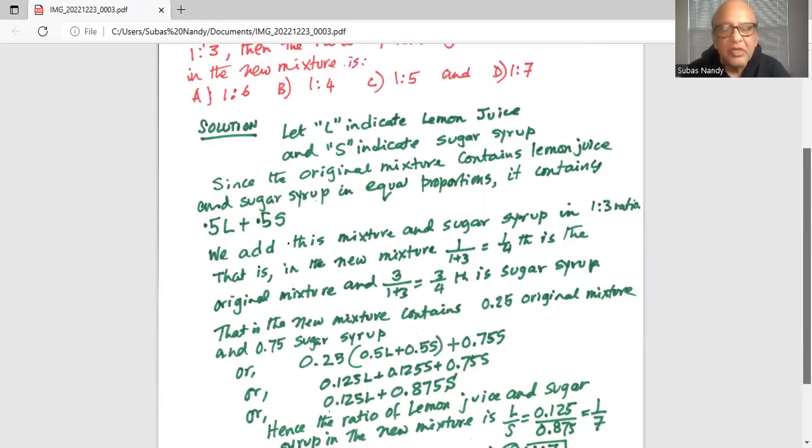So it is 0.5L plus 0.5S inside the parenthesis, plus 0.75 sugar coming from the blend sugar syrup that is added.